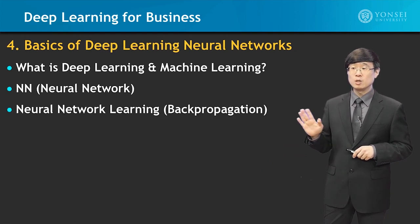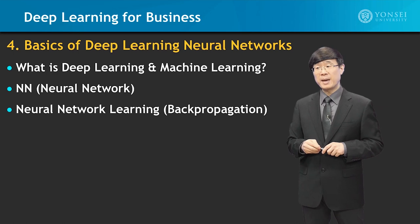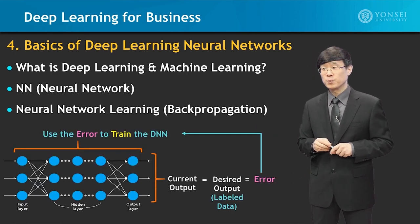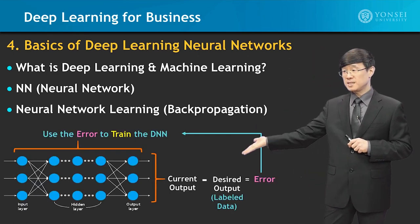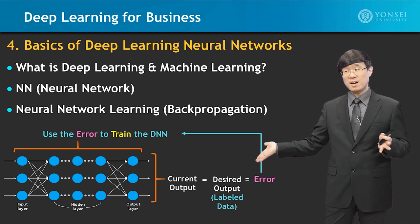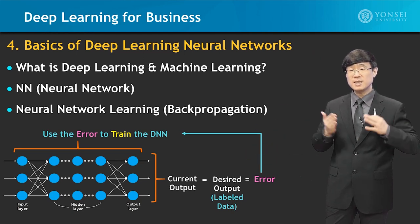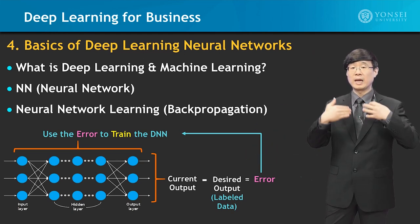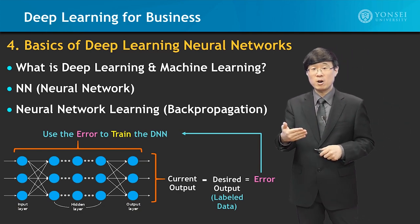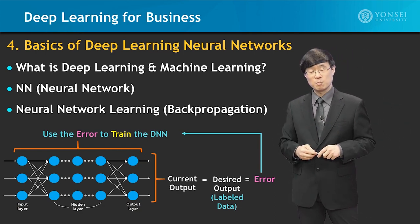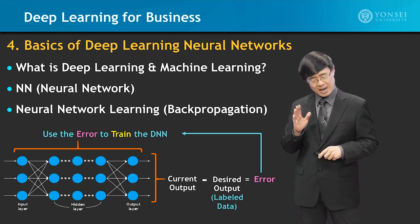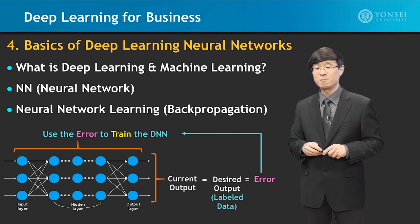Then we'll look into neural network-based learning using the backpropagation model, where you can see a neural network model, its outputs, finding the error, and then using that to retrain the system — to make it learn better and achieve improved performance. How does it work? I will explain it all in simple terms.